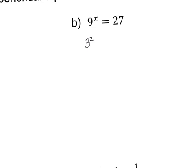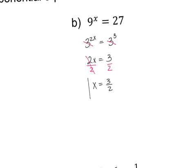3 to the second power is 9, but there is an x here, so make sure you carry down the x. So 9 becomes 3 to the second power with the x dropped down. And 27 — 3 times 3 is 9, and 9 times another 3 is 27 — so 3 to the third power gives us 27. Now I can cancel out the bases since they're the same. So 2x equals 3, I divide off 2, and x is equal to 3 over 2.